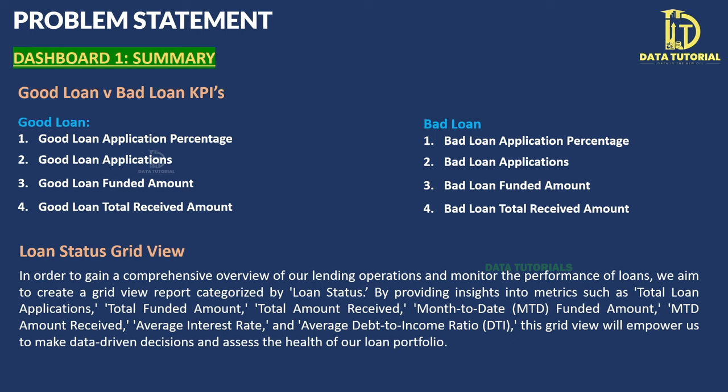The home ownership field indicates the borrower's housing status and is used by banks to assess collateral availability and borrower stability — homeowners tend to have lower default rates. A domain knowledge document is also available explaining how banks process and grant loans, what measures they take, and all relevant banking terminology used in this project.